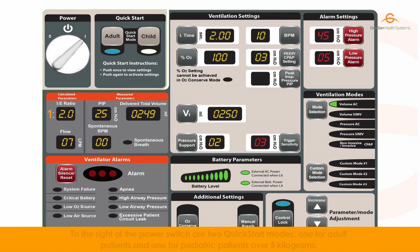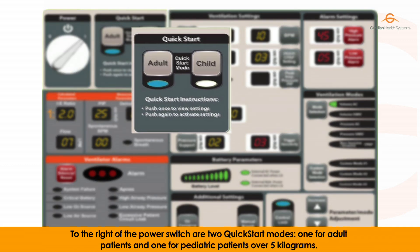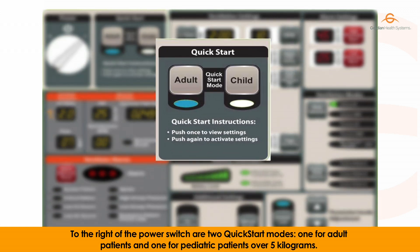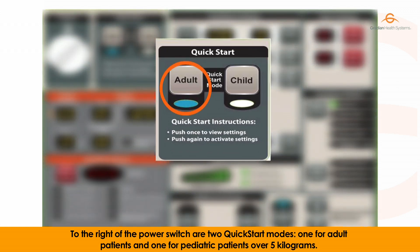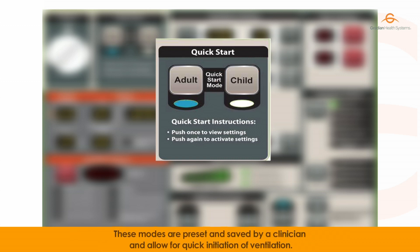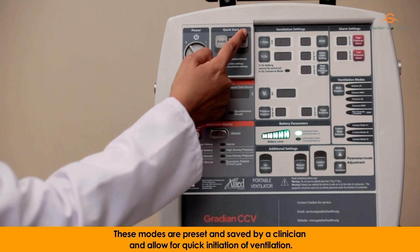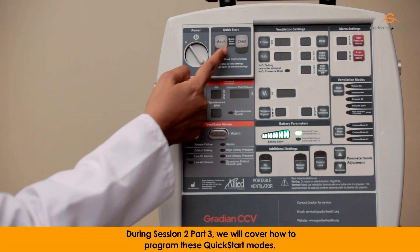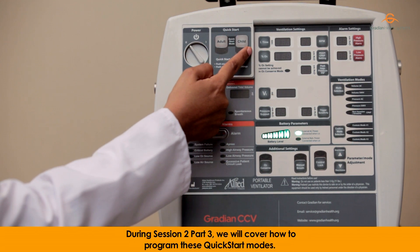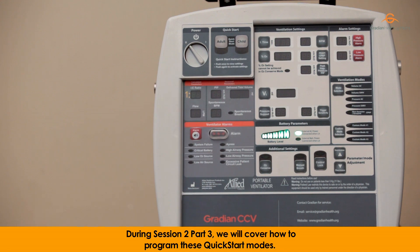To the right of the power switch are two quick start modes, one for adult patients and one for pediatric patients over five kilograms. These modes are preset and saved by a clinician and allow for quick initiation of ventilation. During session two, part three, we will cover how to program these quick start modes.